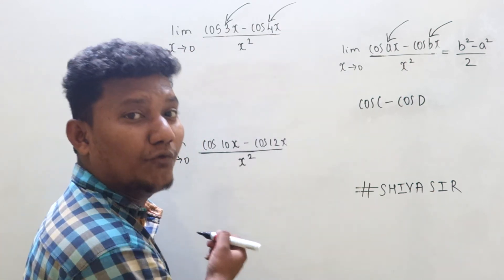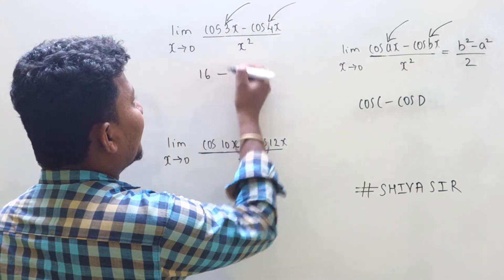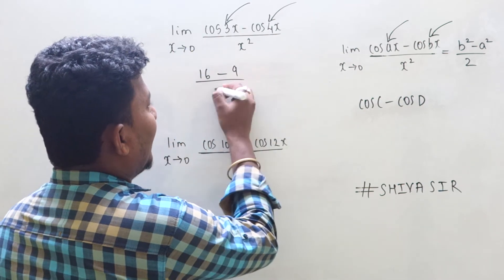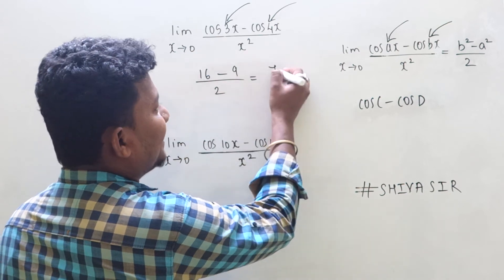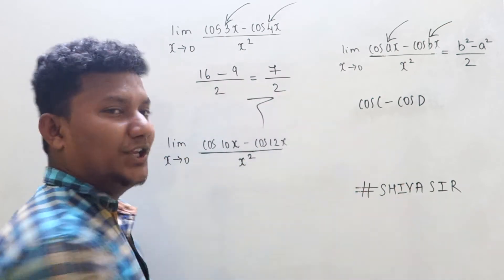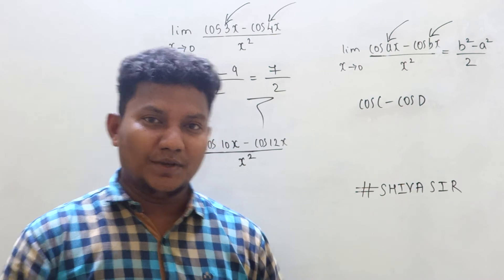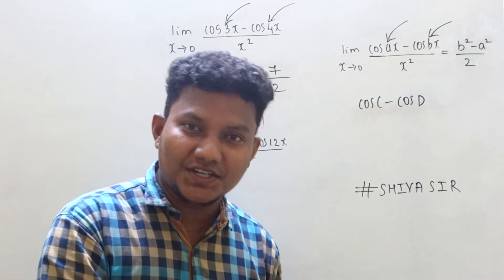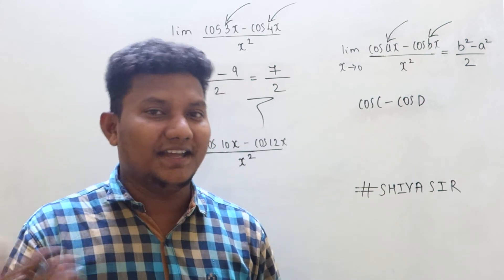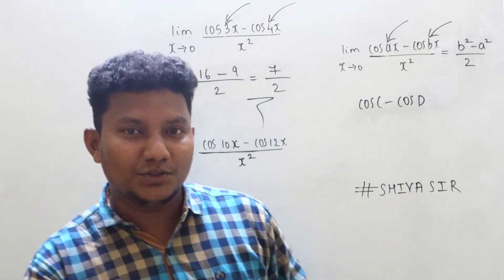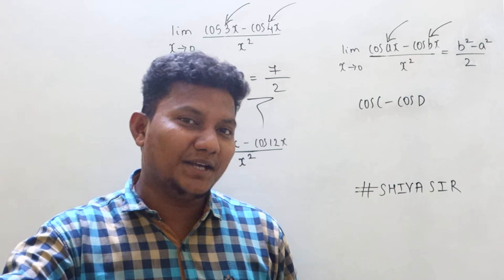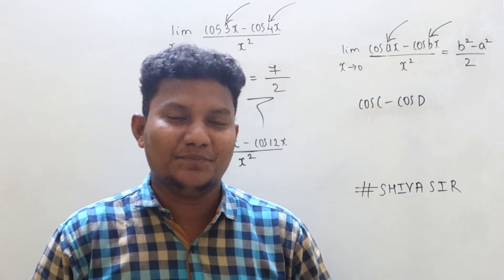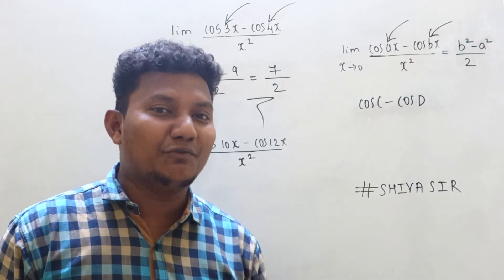b is 4, so 4 square is 16. a is 3, so 3 square is 9. So we get 16 minus 9 upon 2, which is 7 by 2. That's it — you got the answer in just a fraction of a second! If you apply the traditional way using cos C minus cos D, in the second-to-last step you also get 7 by 2 as the final answer — the same result.